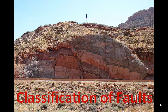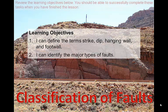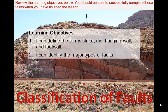Earthquakes occur as a result of motions on faults. In this lesson, we examine how geologists characterize and classify faults. We have two learning objectives: to introduce key terms geologists use to classify faults, and to illustrate examples of the major faults so that you can learn how to draw a labeled sketch of each type of fault.